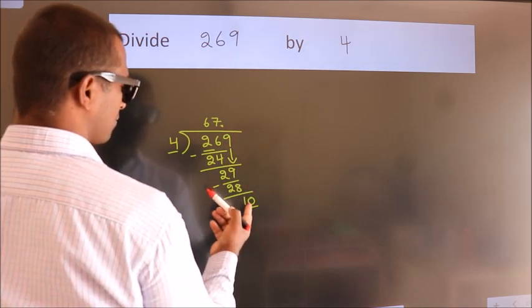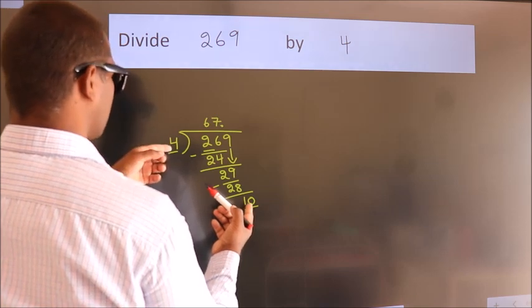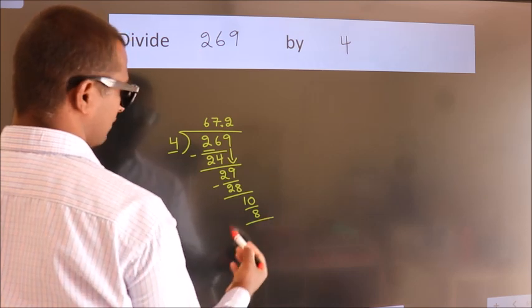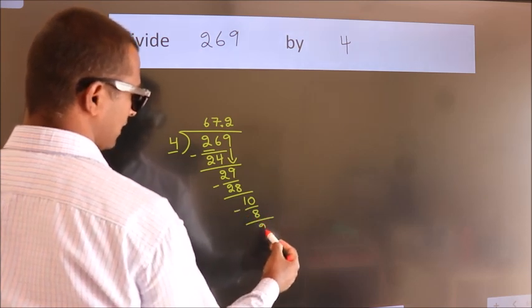A number close to 10 in the 4 table is 4 times 2 equals 8. Now we subtract and get 2.